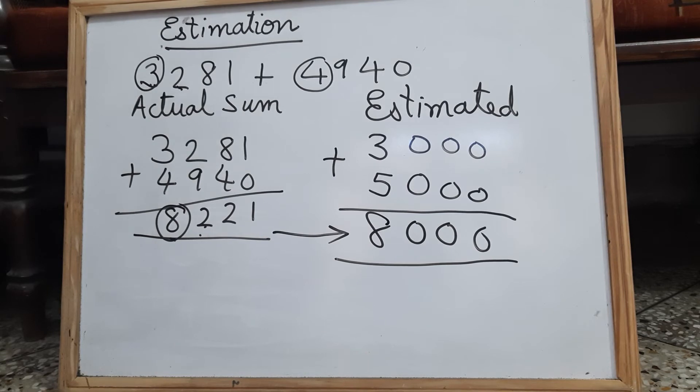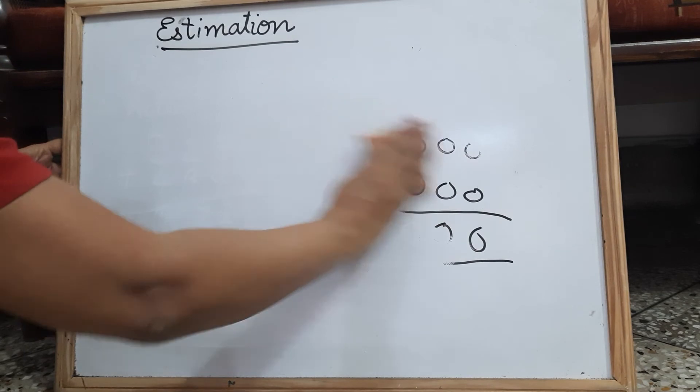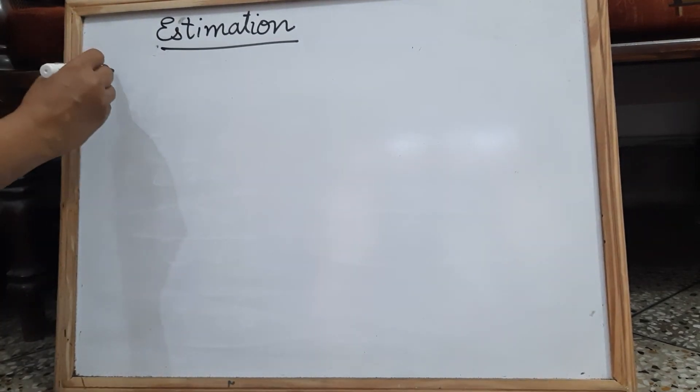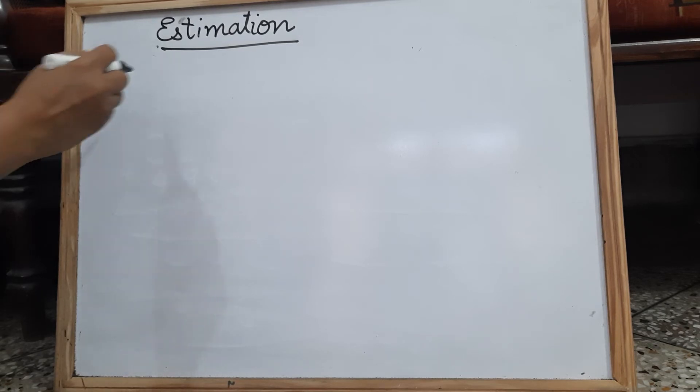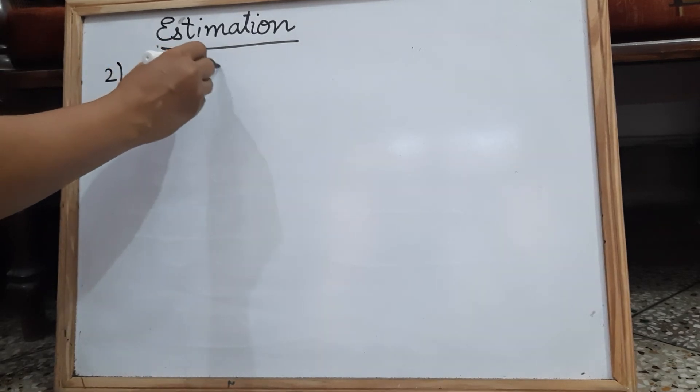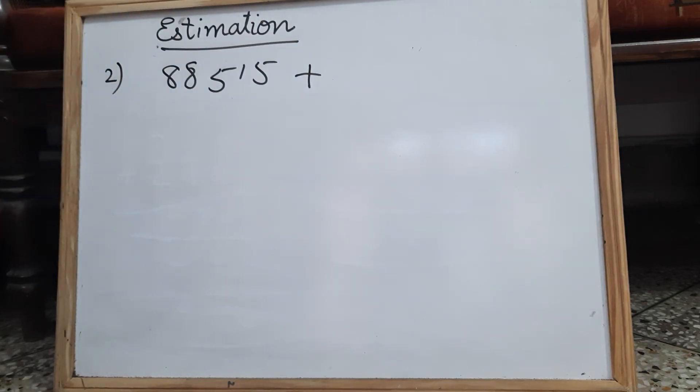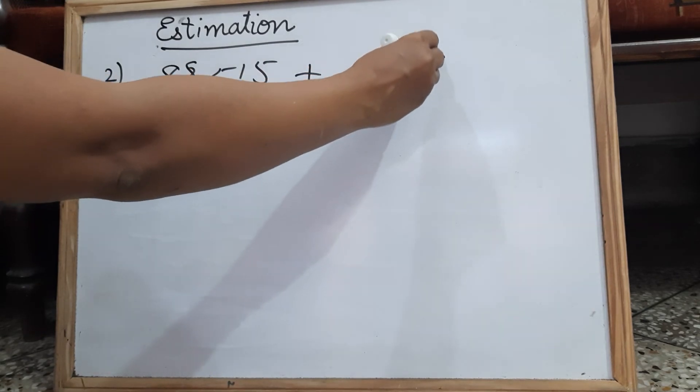One more to the nearest 10,000. Let us take one example. So we are going to find the actual sum and estimated sum by rounding off to the nearest 10,000. Say 88,515 and 14,290.